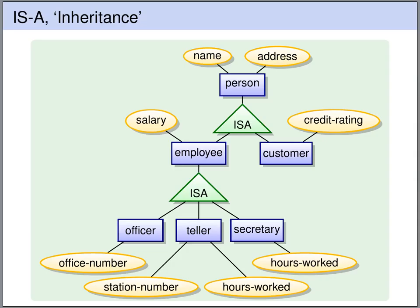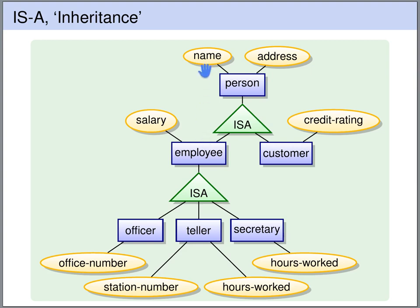This is an example entity relationship diagram. Here we use ISA nodes to express that every employee is a person and every customer is a person. This means that the employee inherits the attributes of person, so every employee also has a name and an address. Likewise, every customer also has a name and an address.